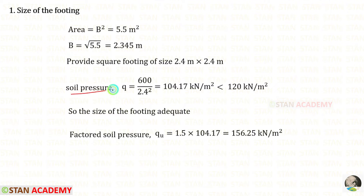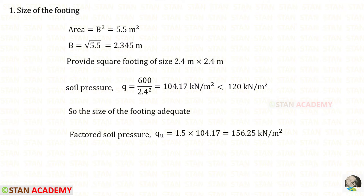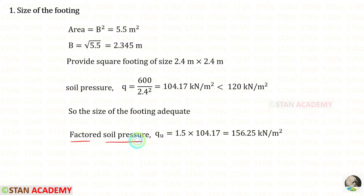The actual soil pressure Q = P/Area = 600/(2.4²) = 104.17 kN/m². This is less than the safe bearing capacity of 120 kN/m², so the size of the footing is adequate. The factored soil pressure QU = 104.17 × 1.5 = 156.25 kN/m².